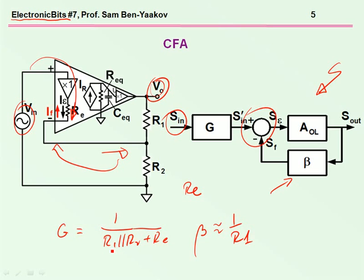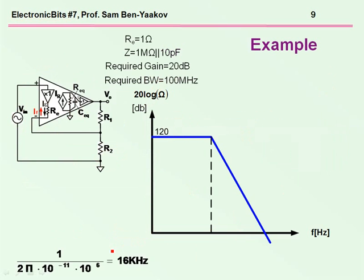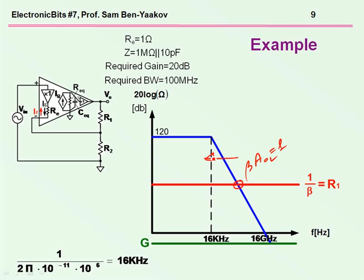Now, as I've shown before, the bandwidth of an amplifier is determined by the point at which beta A is equal to 1. The loop gain is equal to 1, because in the area below this, the gain is G over beta. This is the gain. The area above it, the gain is G times A open loop, as we've seen before. So, this is the crossover frequency, and this is the end of the bandwidth.